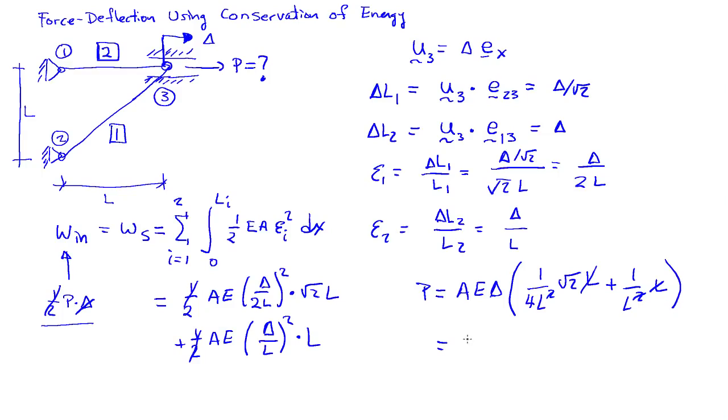We can factor this a little bit here. I'll have AE over L times delta times, and then we have the square root of 2 over 4 plus 1. If you want, you can simplify that a little bit, but that's the essence of the analysis.